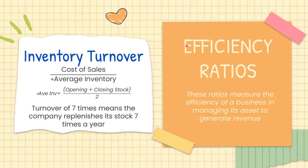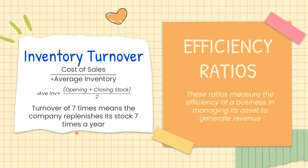The second type of ratio is efficiency ratios, which measure how efficiently a business manages its assets to generate revenue. We want to see how efficiently the company generates profit by utilizing its available assets. The first ratio under efficiency is inventory turnover. The formula is cost of sales divided by average inventory, where average inventory equals opening stock plus closing stock divided by two. For example, a turnover of 7 times means the company replenishes its stock 7 times a year — the higher the ratio, the faster the company sells its stock.